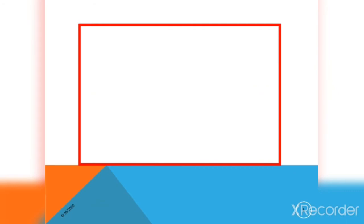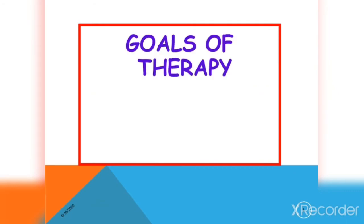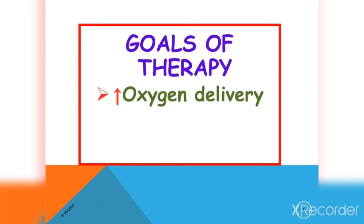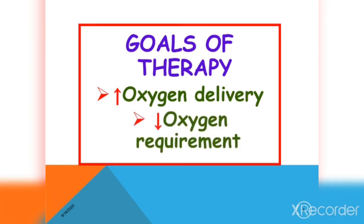These are the strategies, goals, or aims of therapy when dealing with an angina patient. These include increasing oxygen delivery to the myocardium, which can be achieved by reversing the vasospasm of the coronary vessels. Next is decreased oxygen requirement, which can be done by decreasing total peripheral resistance, cardiac output, or both. In the next slide, we will show you the drug therapies which specifically target these goals in order to achieve therapeutic success.